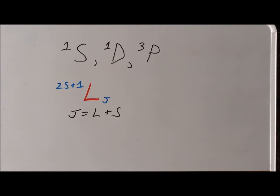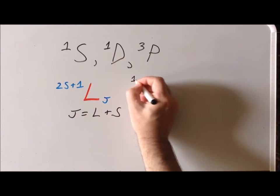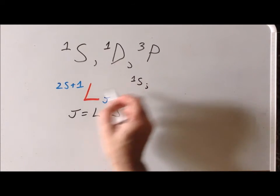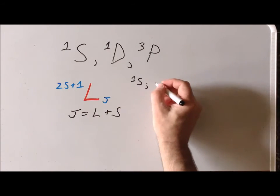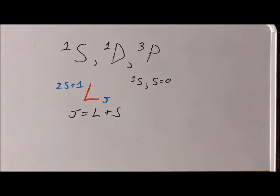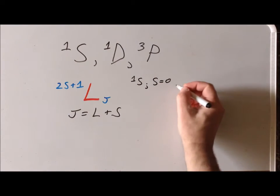Suppose we are trying to find the J value for our first term. We notice in this particular case the spin multiplicity is 1, so that tells us that the value of S is going to be equal to 0. What is the value of L? Well, since it's an S as a symbol right there, that tells us L is equal to 0.